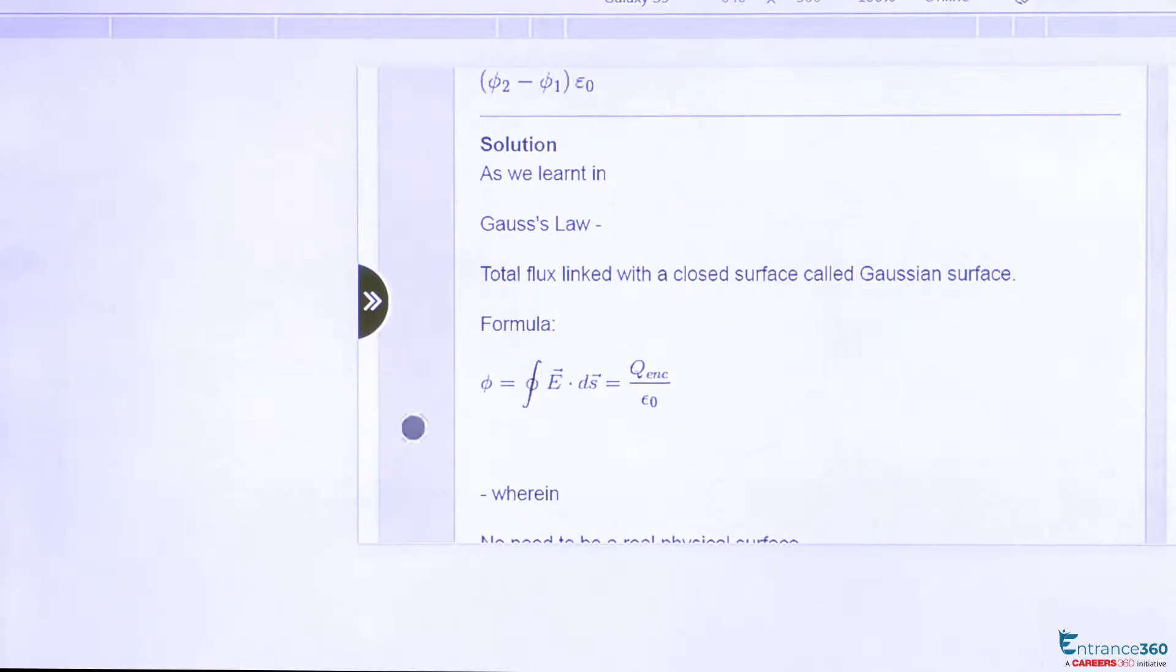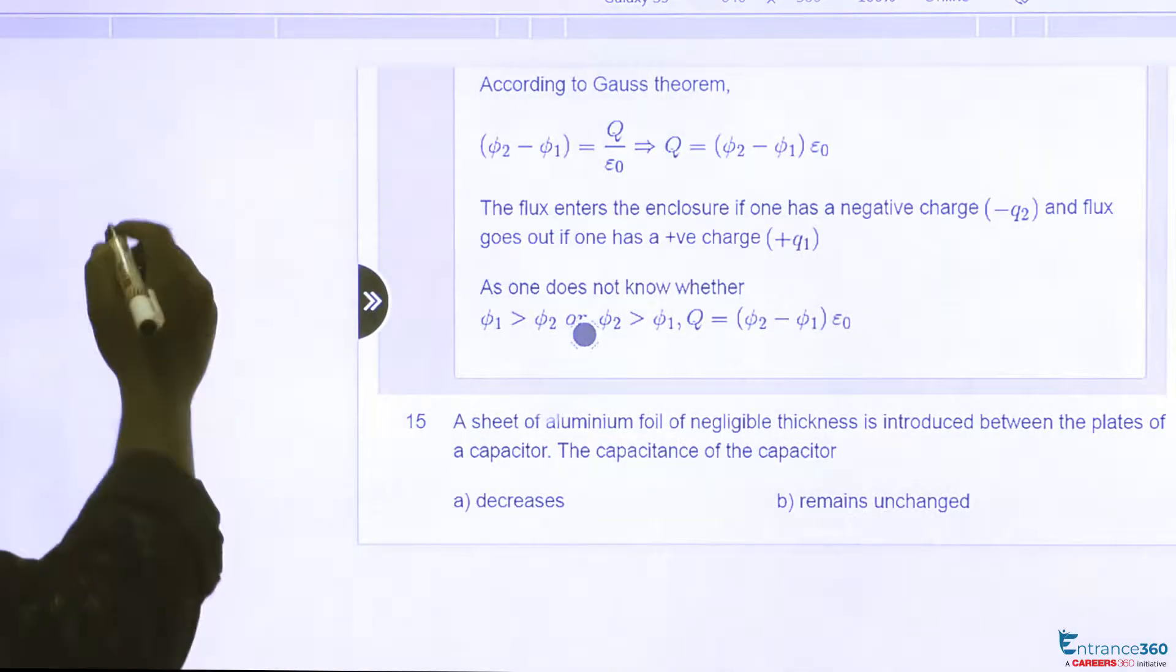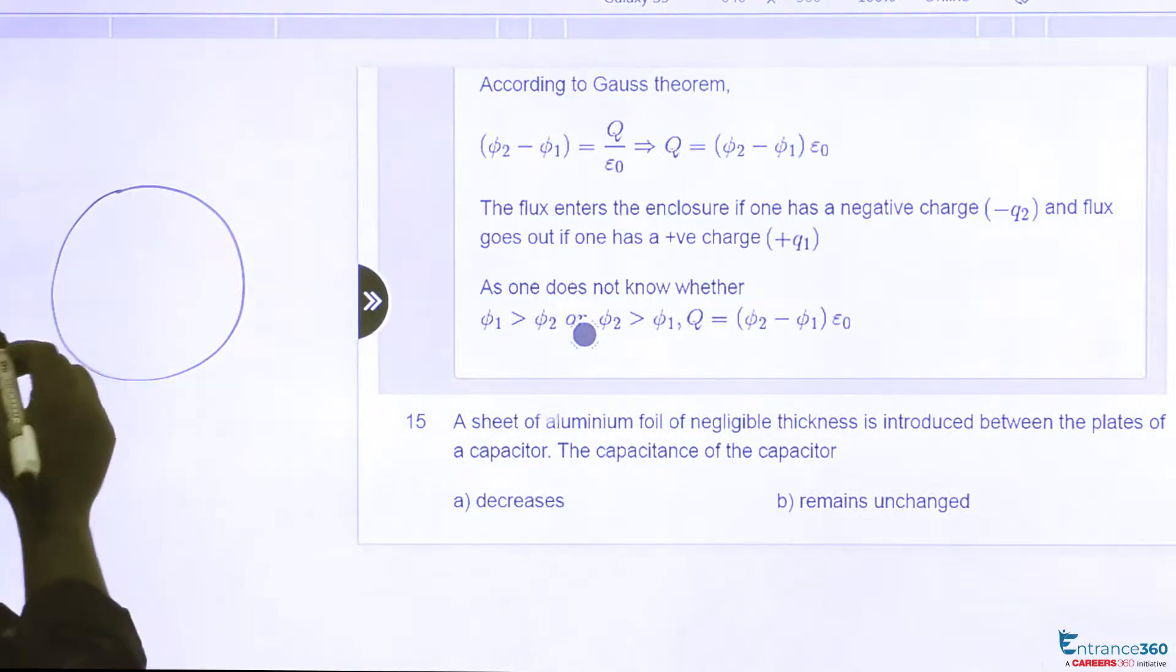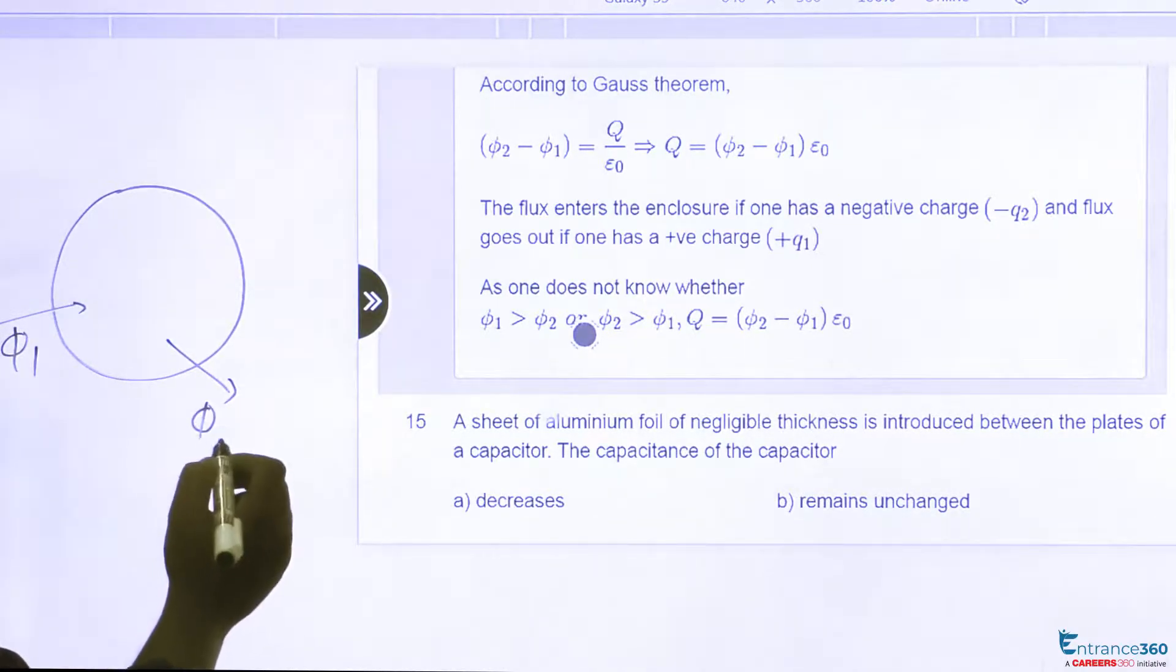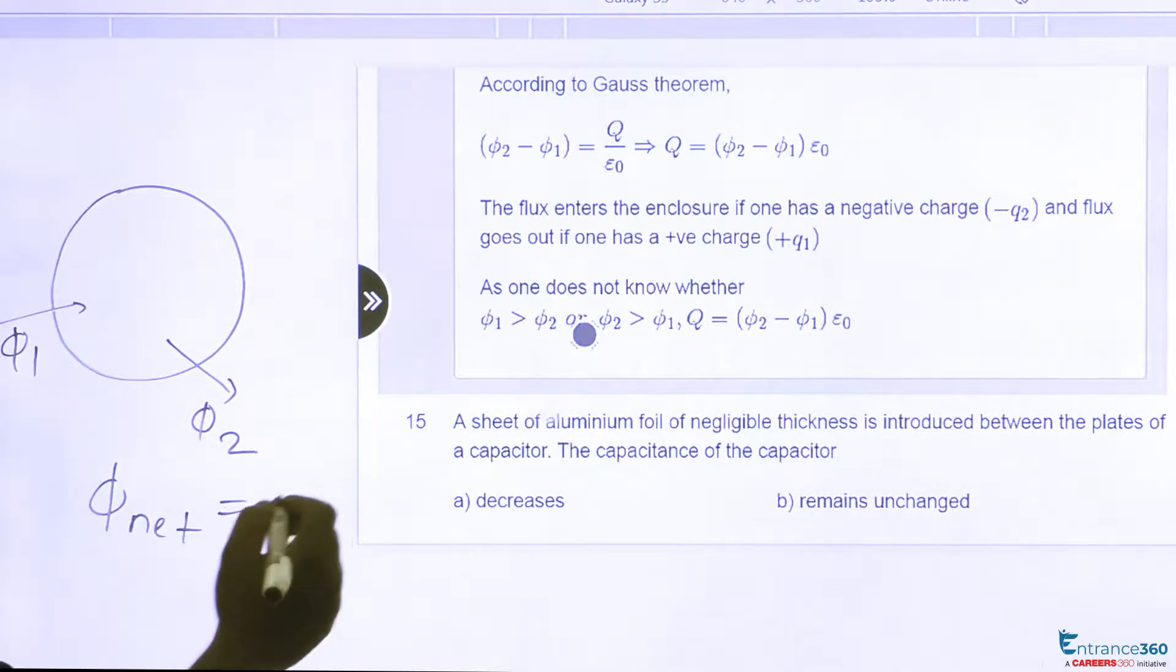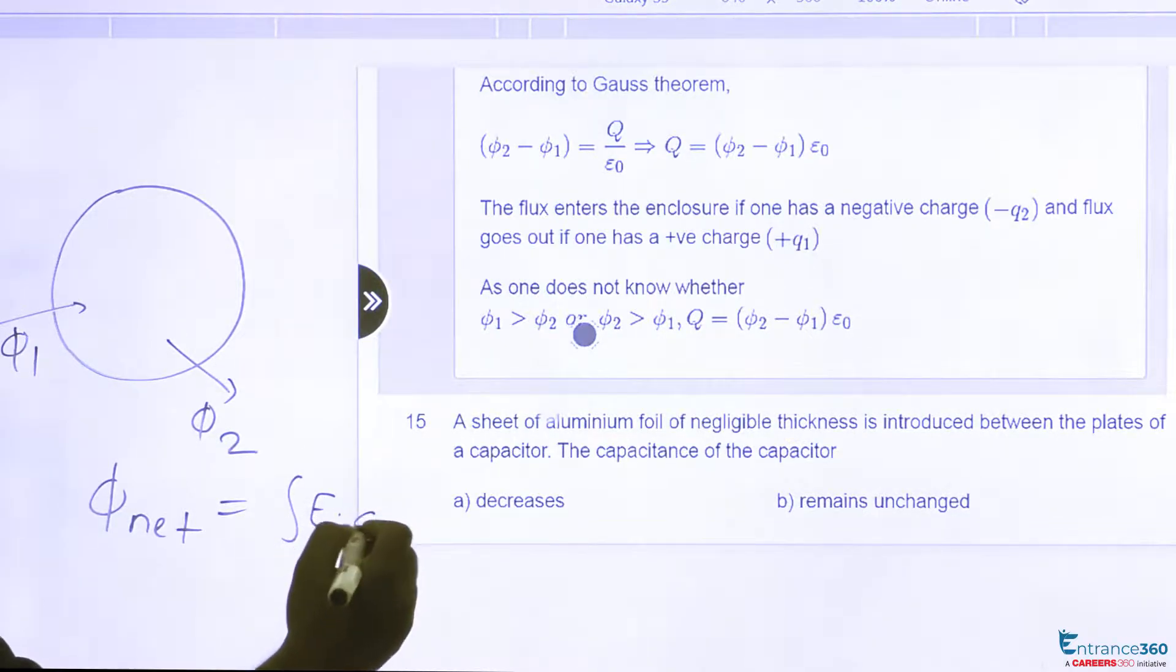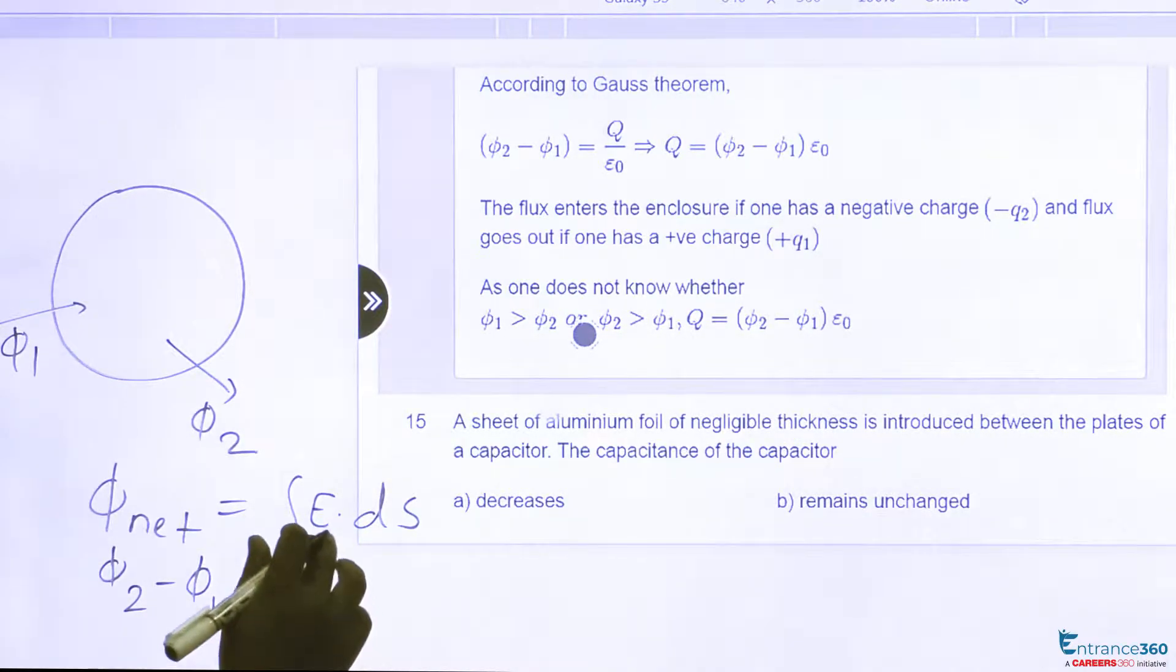It says flux is equal to E dot ds. Now as given in the question, for a surface phi1 is flux entering and phi2 is flux leaving. Gauss law says flux net is given as integral of E dot ds. From the figure we can clearly see that phi net is phi2 minus phi1 which is equal to E dot ds.